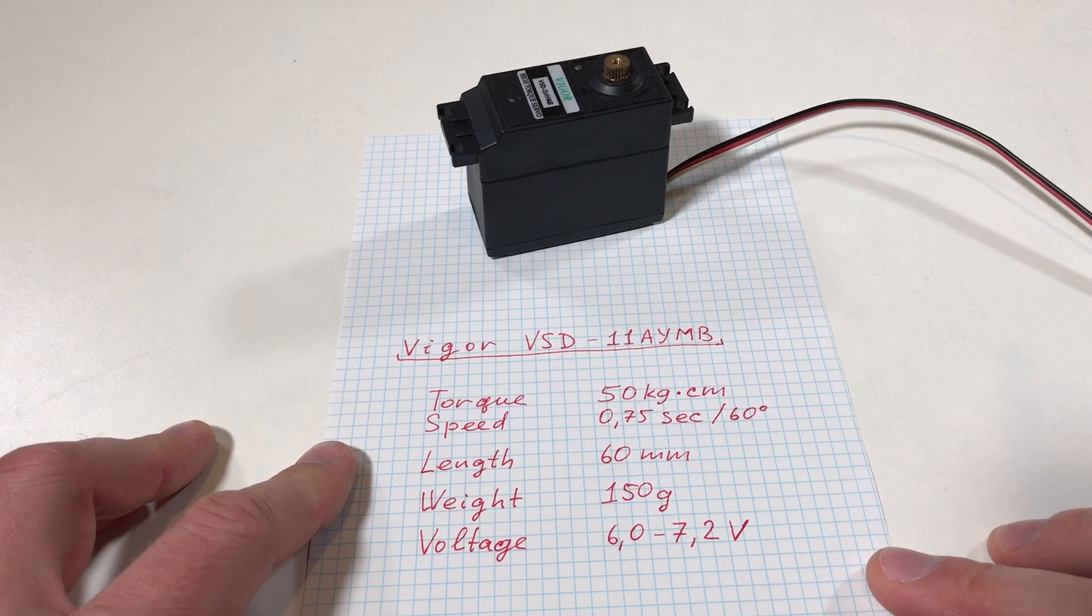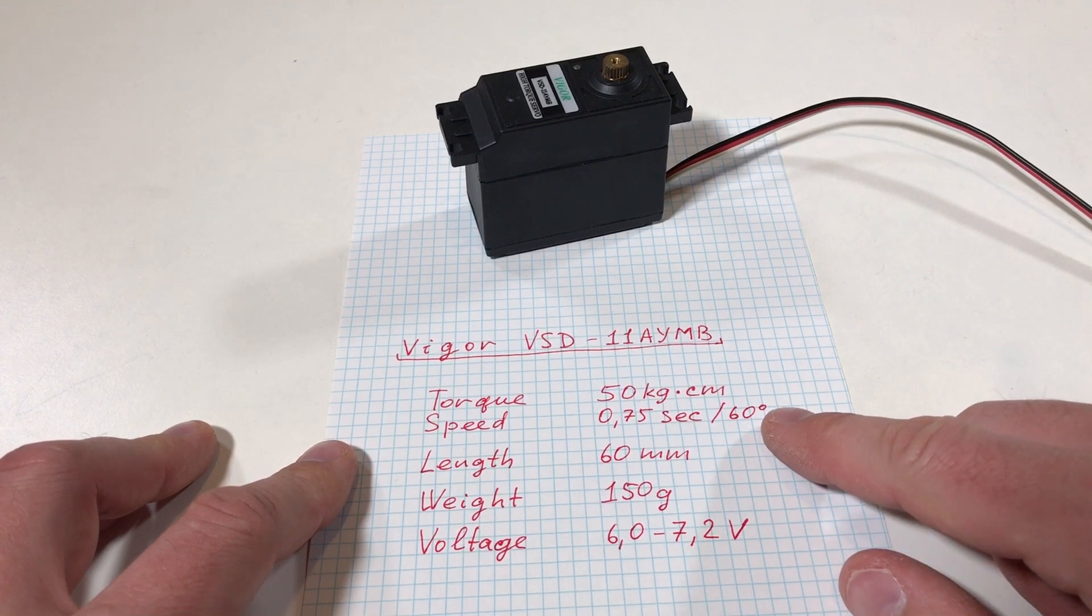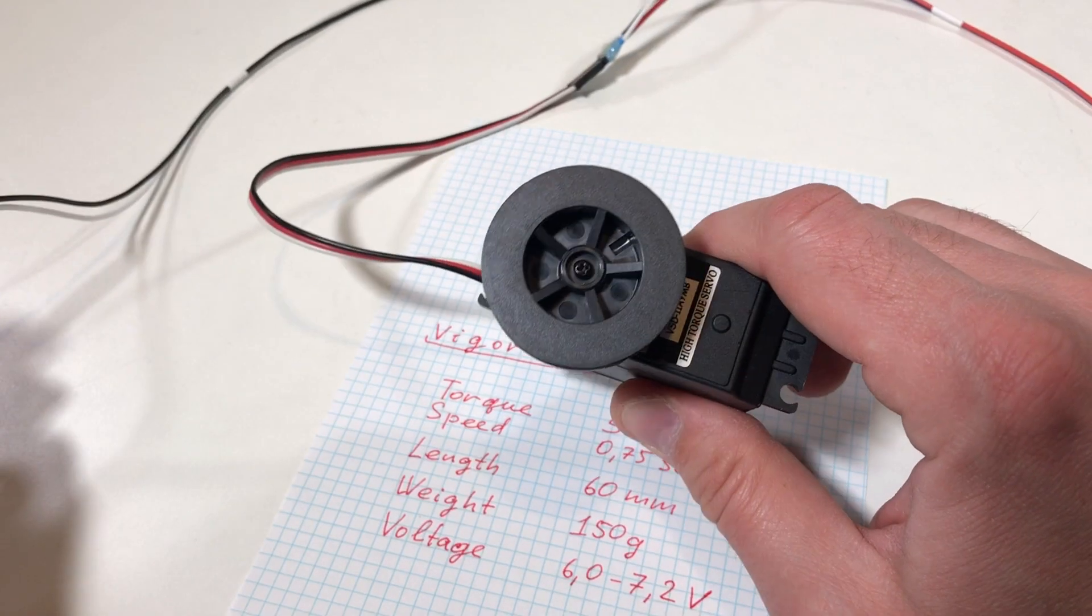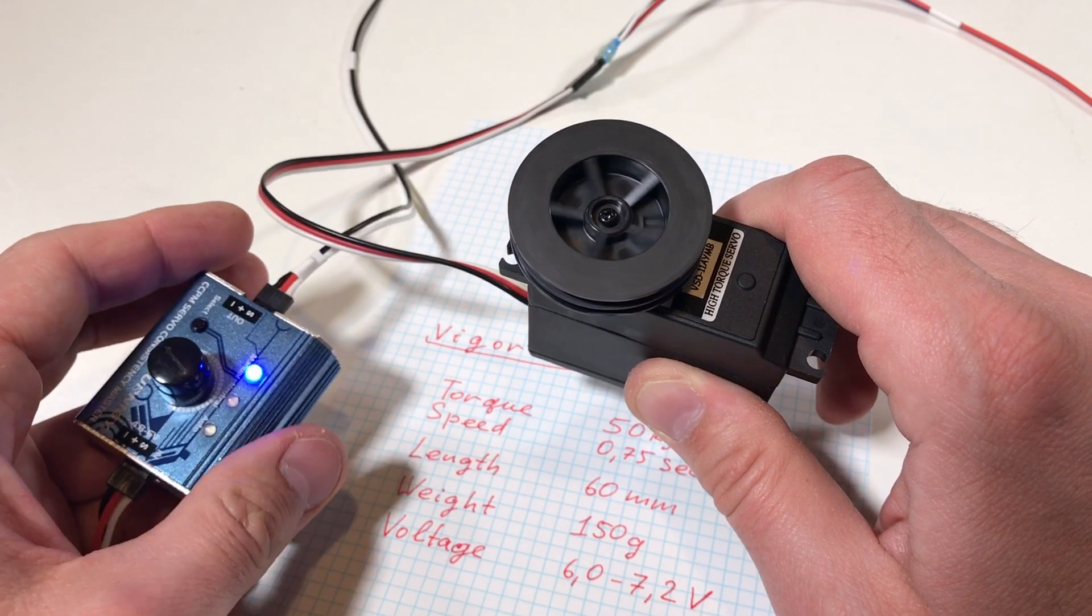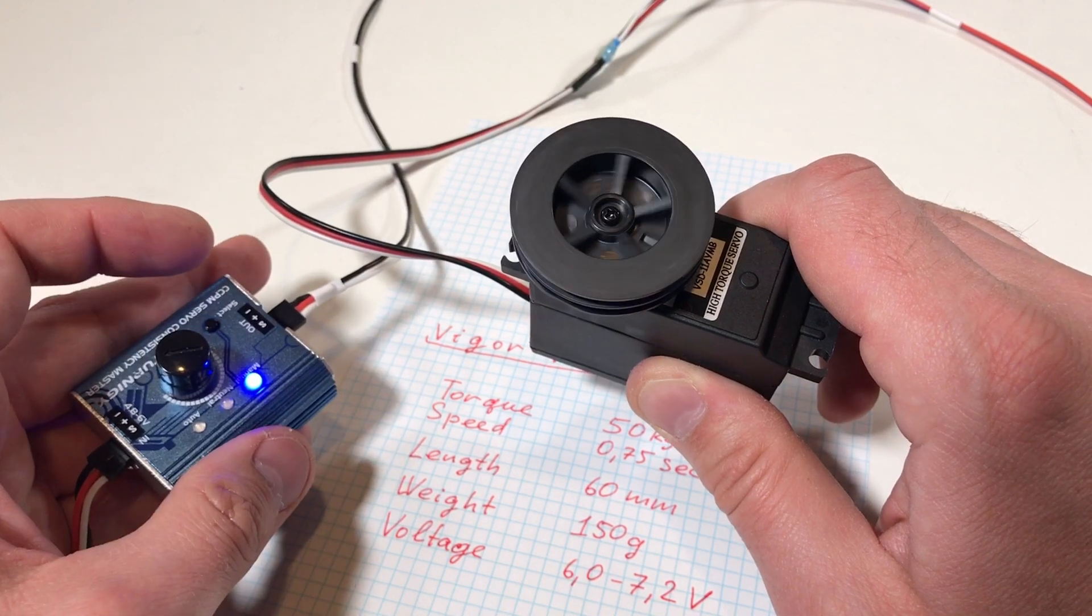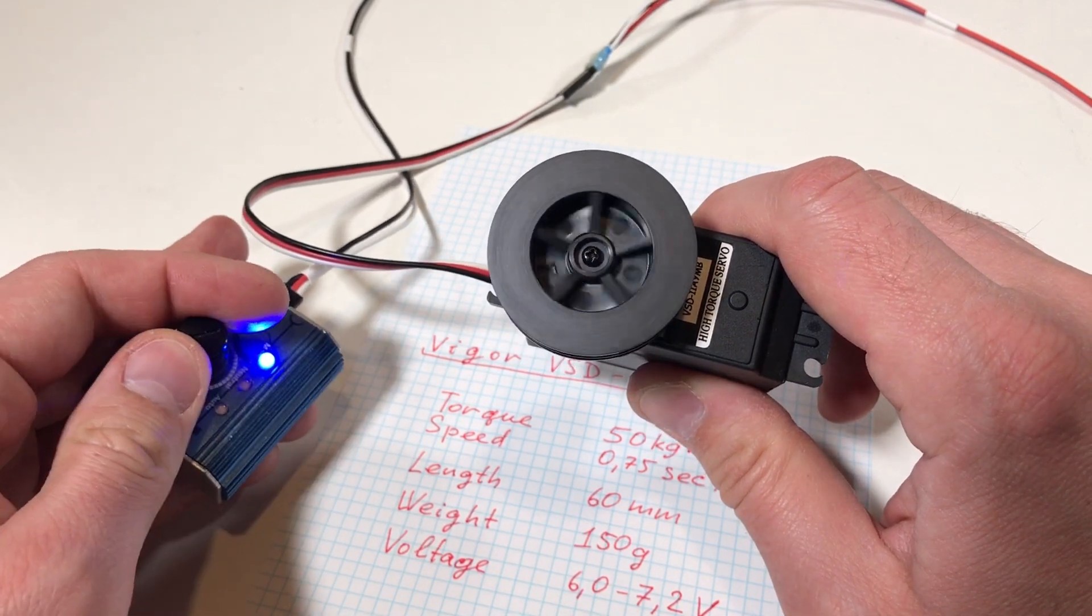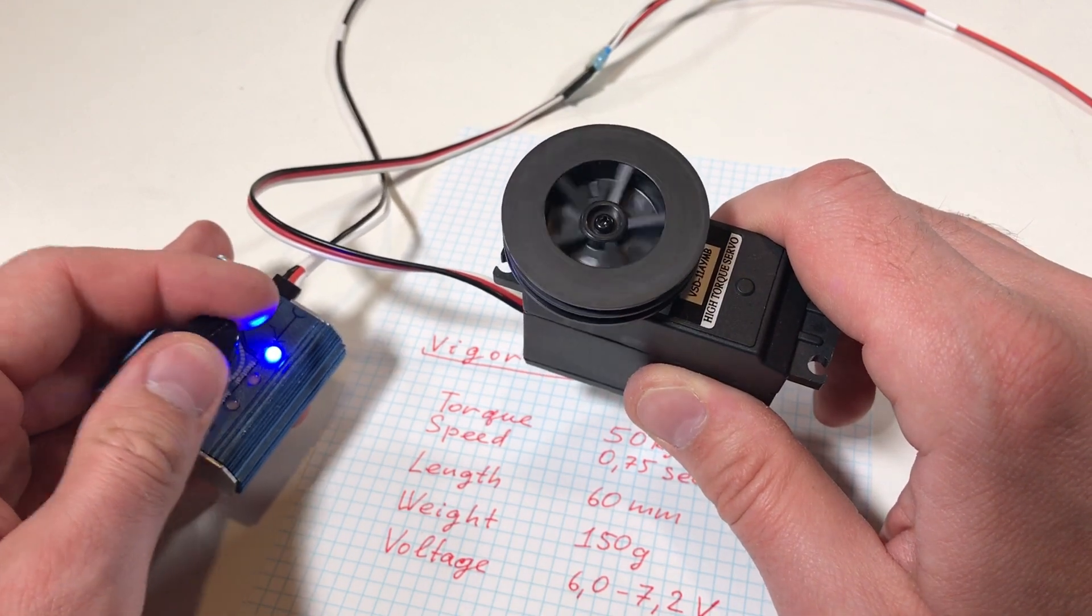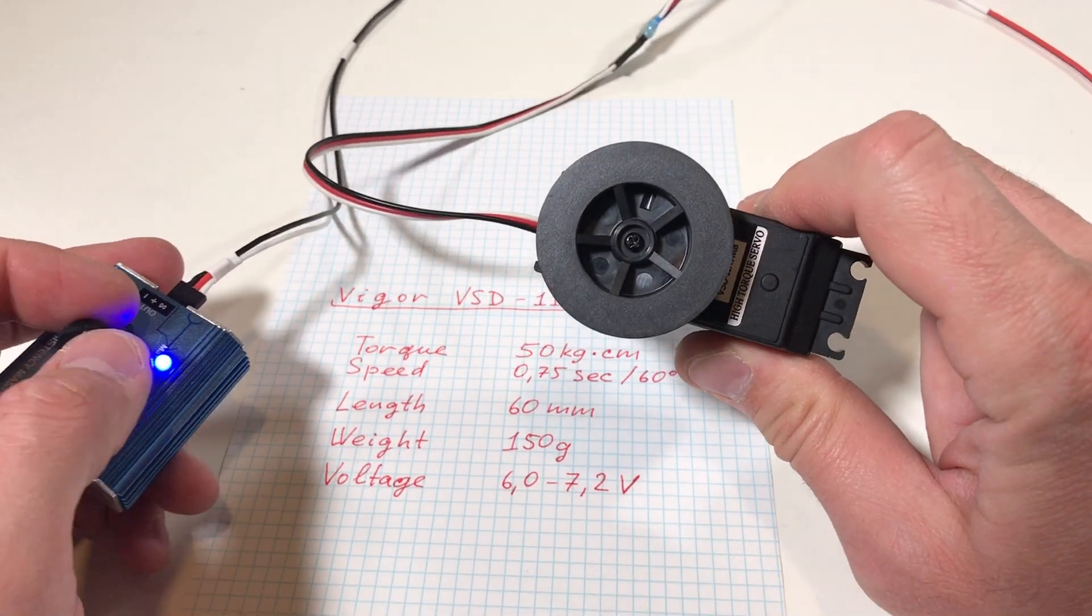This next servo is very powerful. It has 50 kilogram per centimeter torque, but it's quite slow. Let's see how it works. The interesting thing about this servo is that it has many turns. This is one limit position, and this is another limit position. Actually, it looks quite fast, so it's fast and it also has quite high torque, 50 kilogram per centimeter. Nice.